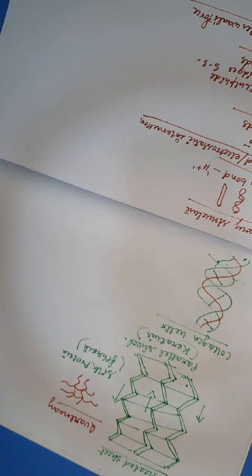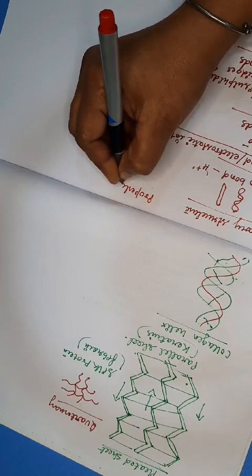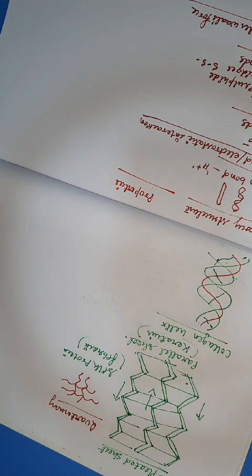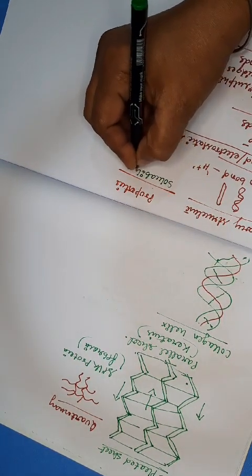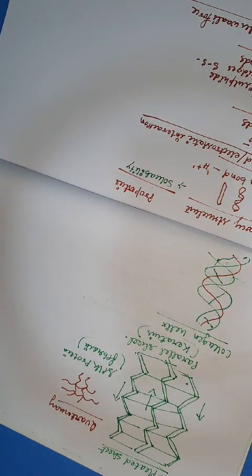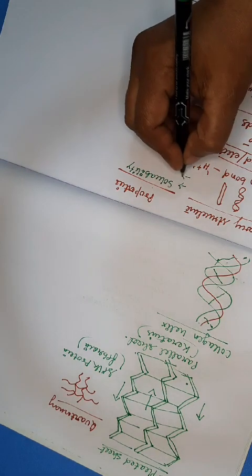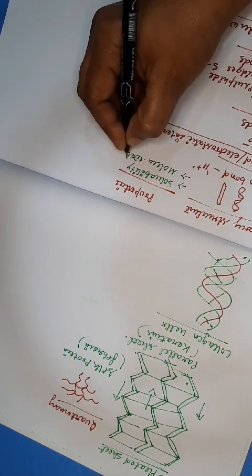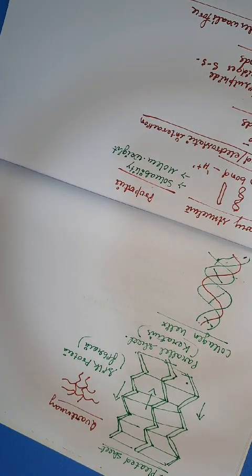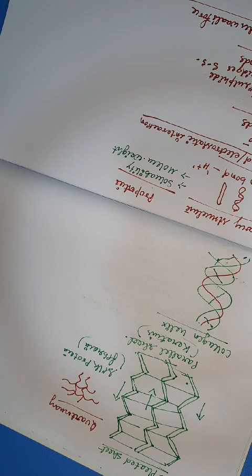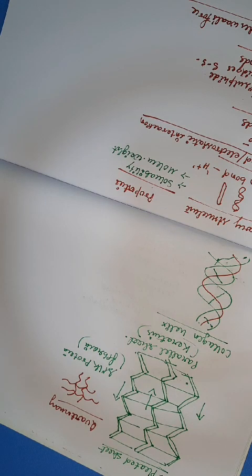Let us now come to the properties of proteins. The first property is solubility: proteins form colloidal solutions instead of true solutions in water because of their huge size. The second property is their molecular weight. Proteins vary in molecular weight depending on the number of amino acids they contain. The majority of proteins consist of around 40 to 4,000 amino acids, with molecular weights ranging from 4,000 to 44,000 daltons. For example, insulin has a molecular weight of 5,700 and hemoglobin 64,500 daltons.